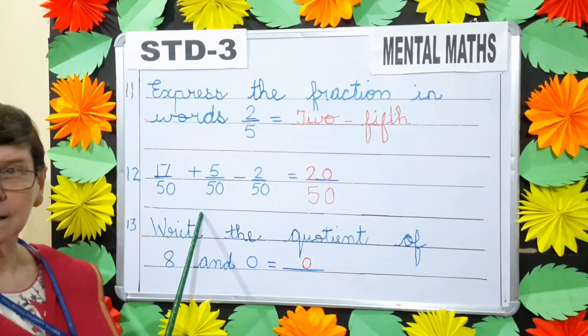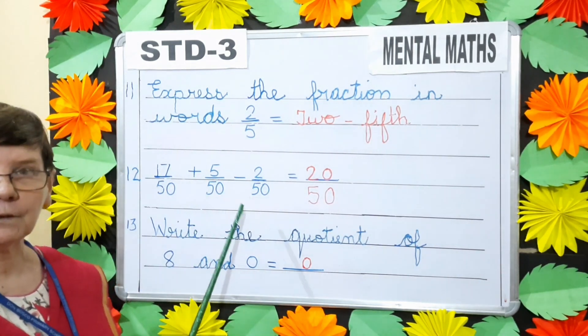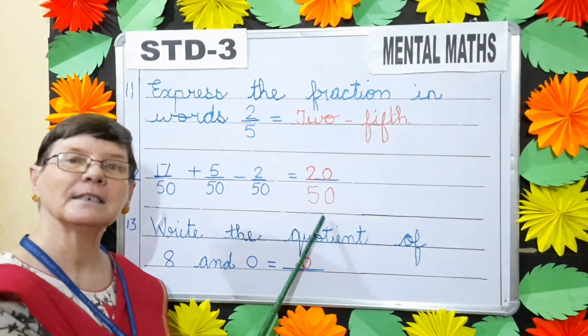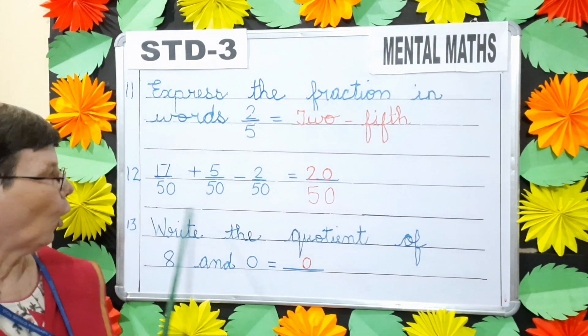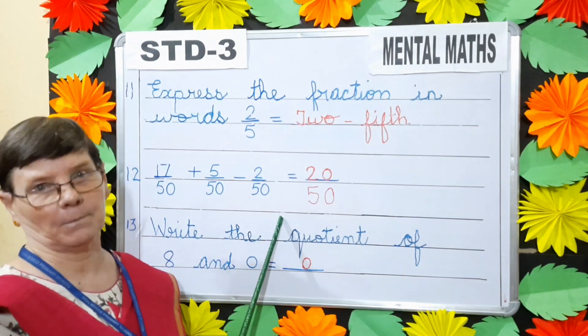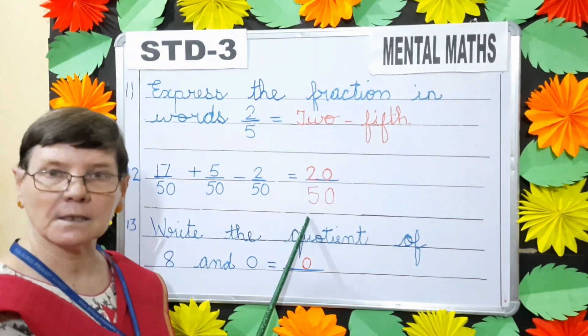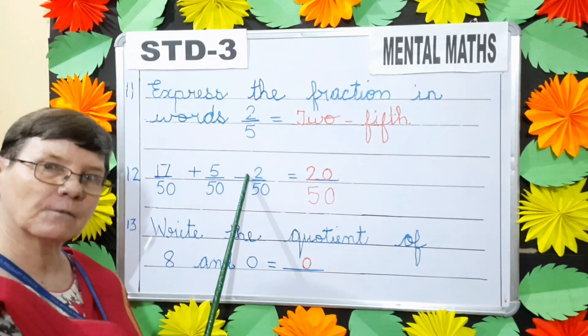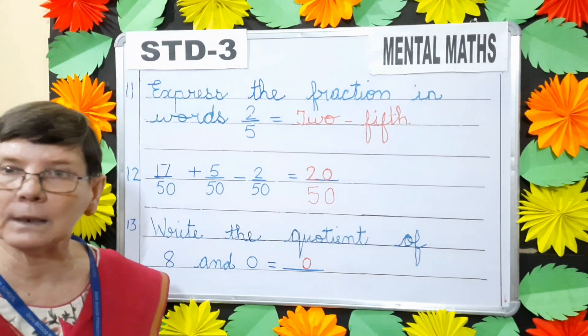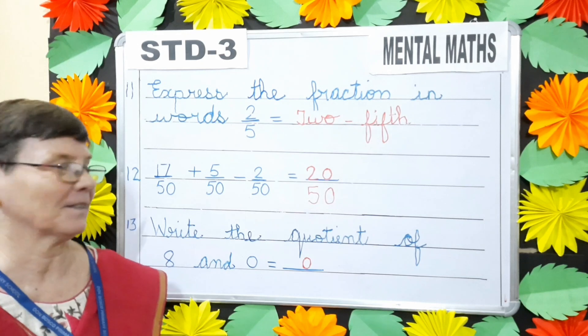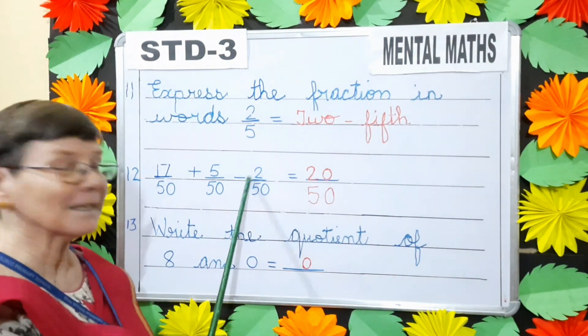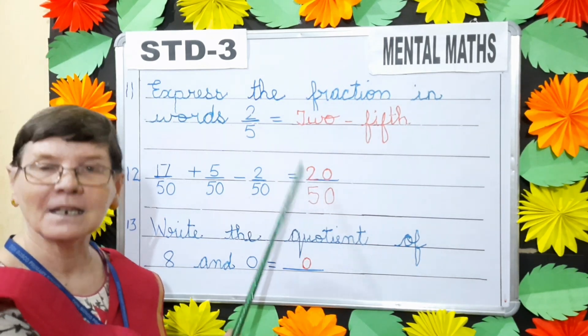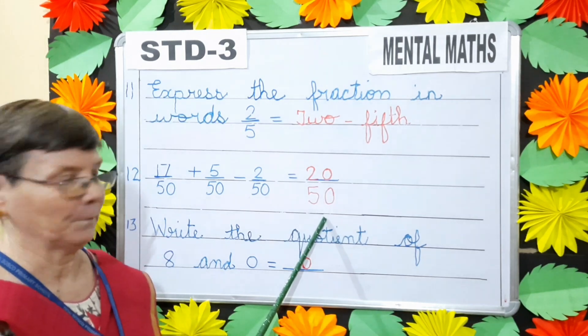Next, 17 by 50 plus 5 by 50 minus 2 by 50 is equals to dash. What do you notice in this question children? All the denominators are the same. So I will write 50 as the denominator here. Now first, we will add 17 plus 5. So 17 plus 5 will give you 22. Correct. Now 22 minus 2. What will you get? 20. So the answer is 20 by 50.